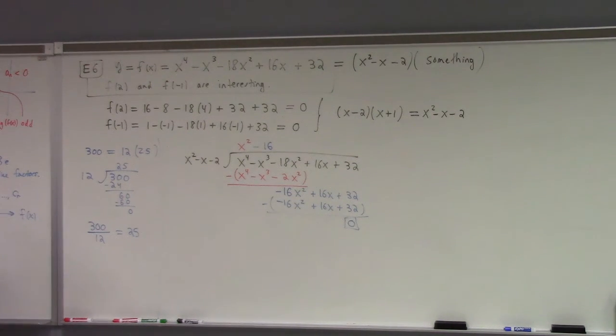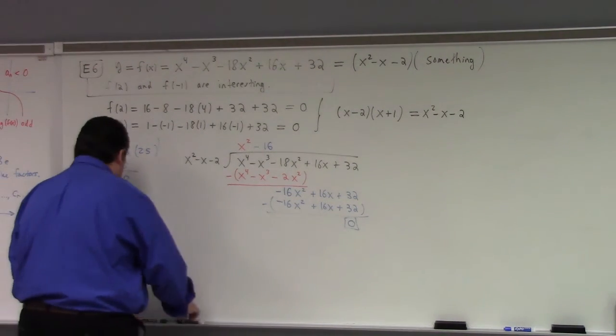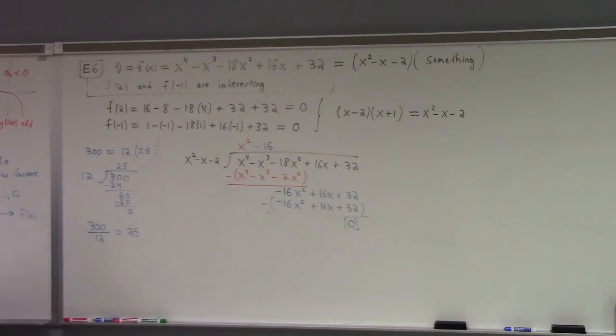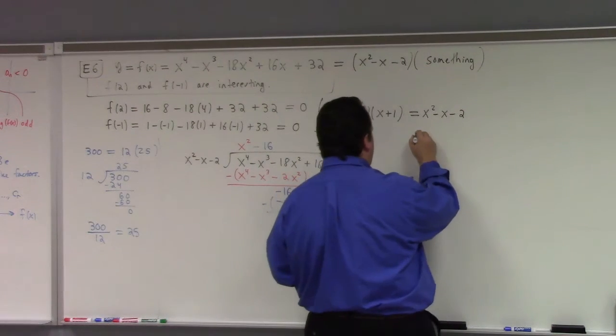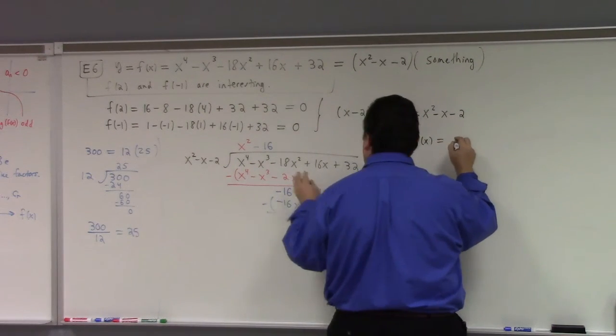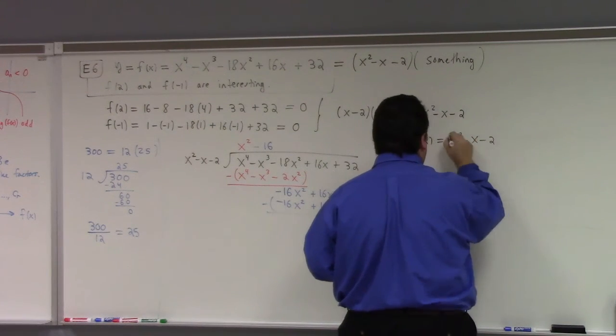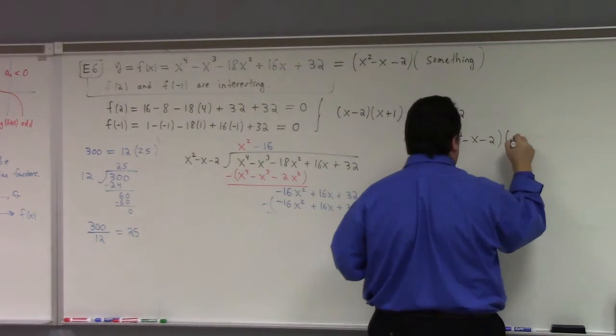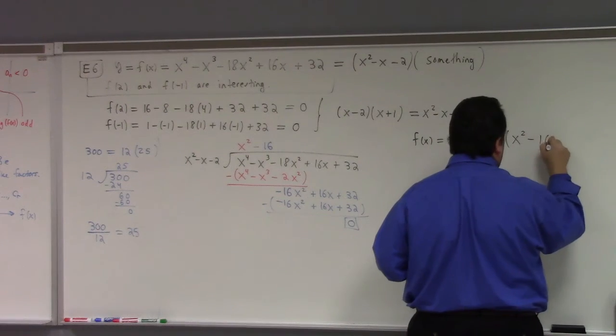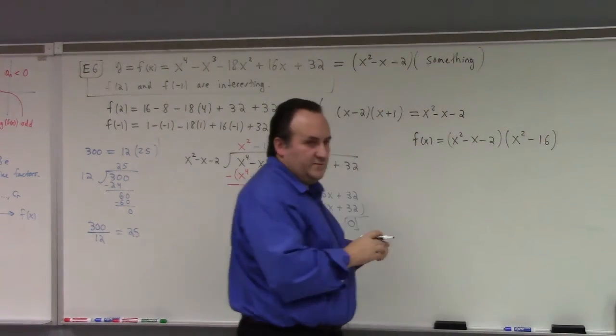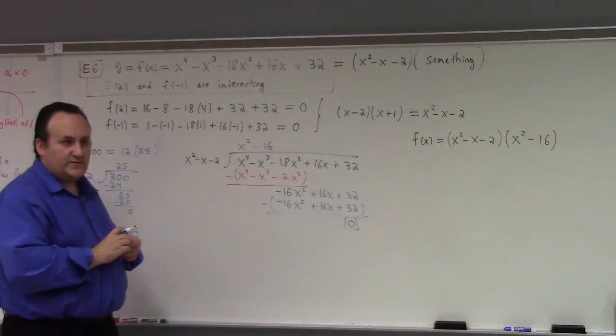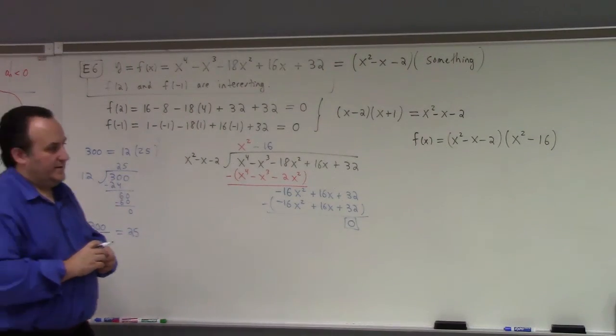So, what does all this mean? This means that our polynomial, we have factored it actually. And so the polynomial now, we have f of x is equal to, as it happens, x squared minus x minus 2. The something, turns out, was just x squared minus 16, right? Which you could have figured out by guessing, I'm sure, if you had some time.